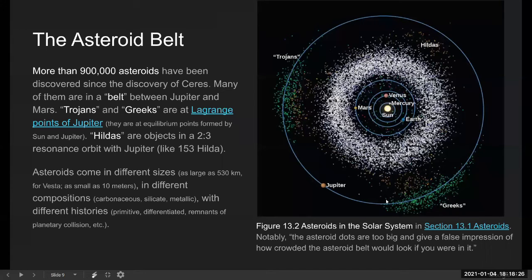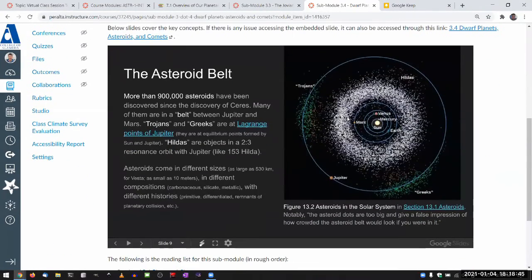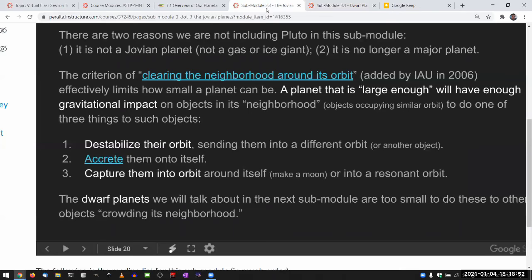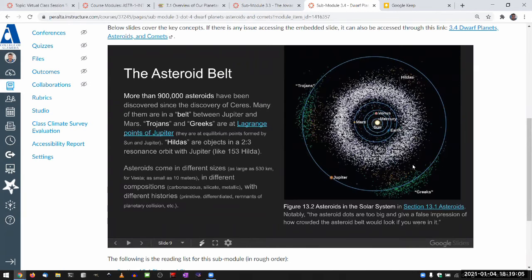And all these objects, they are gravitationally influenced by Jupiter. So even though there are objects in the orbit of Jupiter, that doesn't make Jupiter not a planet anymore, because Jupiter gravitationally dominates how these objects move around. These Trojans, Greeks, Hildas, those asteroids are in an orbit that is resonant with Jupiter's orbit.